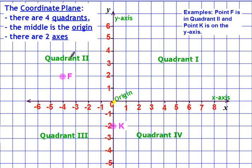Point F is in quadrant two. We would say that point K is on the y-axis. Can you see that it's not in quadrant three or four? So it's on the y-axis.